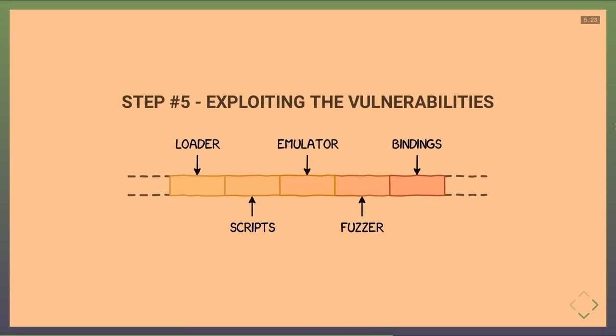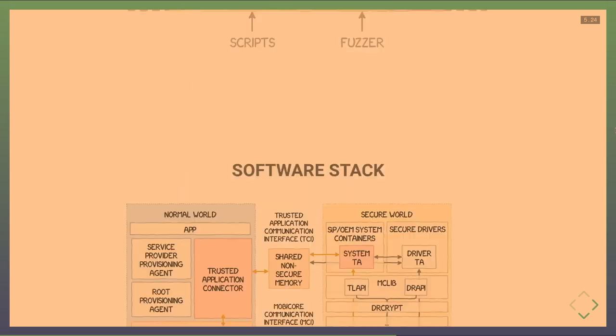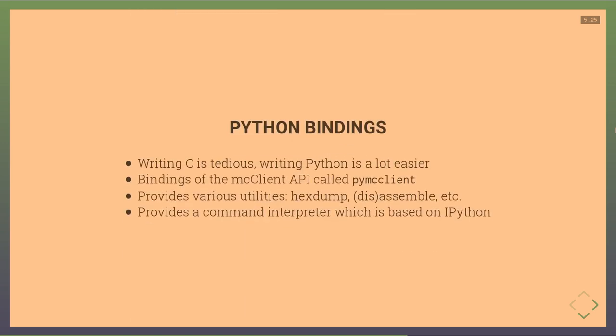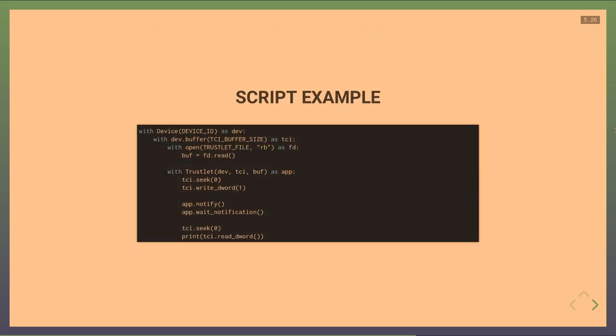To exploit vulnerabilities, we needed to use the native API in the normal world to communicate with the secure world, but we didn't want to write exploits in C. So we developed Python bindings for the API — the native API is called MC Client; our bindings are called PyMCClient — providing utilities like hexdump, disassemble, assemble, and a command interpreter. A script to load a trustlet, send a command, wait for notification, and display results is under 20 lines of Python, versus about 100 lines in C.